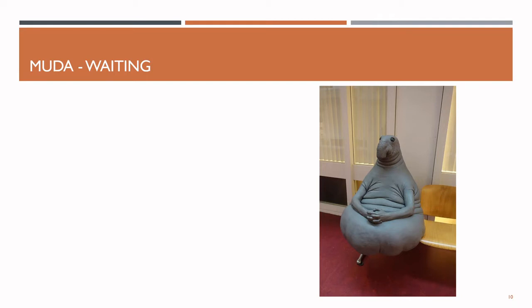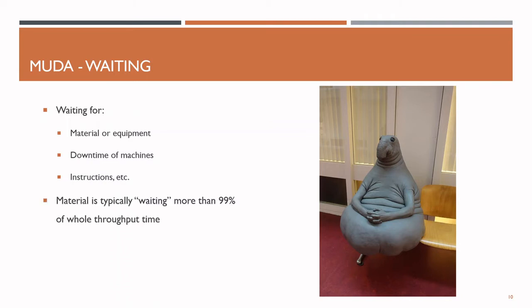The fourth waste of lean is waiting. Here we talk about waiting for material or equipment, downtime of machines, instructions, and so on. In fact, material is typically waiting more than 99% of the whole throughput time instead of being worked on. If you don't believe that, let me show you a quick example.